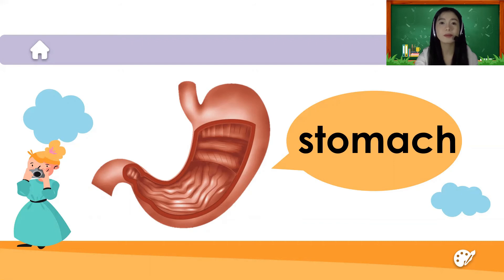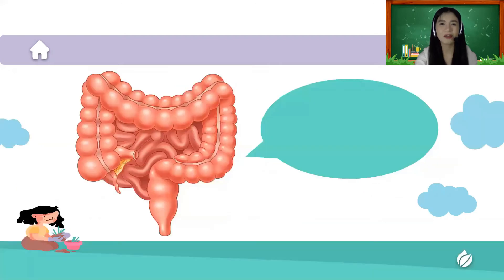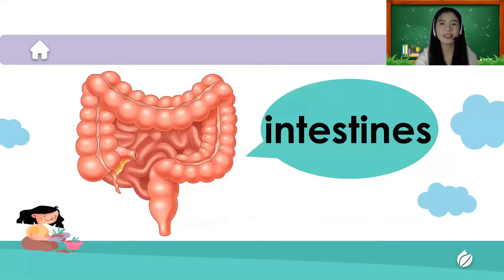We also have our stomach. Let's spell the word stomach: S-T-O-M-A-C-H. It grinds the food that we eat — it is called the food grinder of the body.